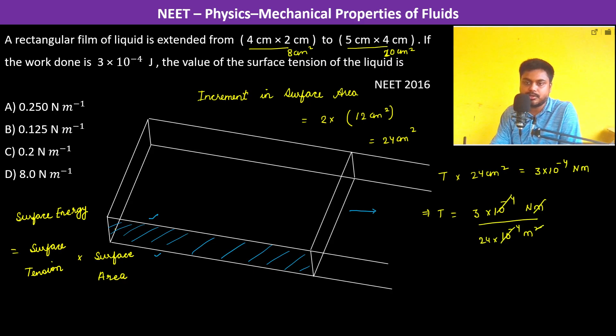This cancels out. So this is 1 by 8 which is 0.125 newton per meter. Therefore the answer is B.